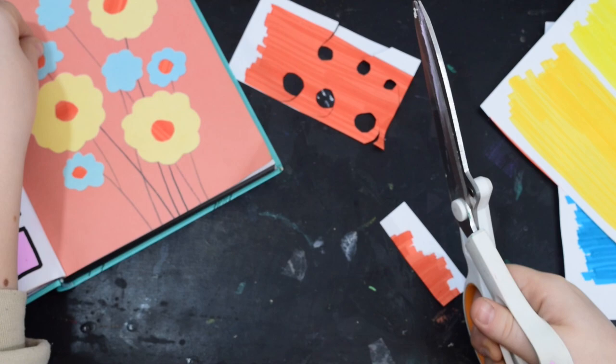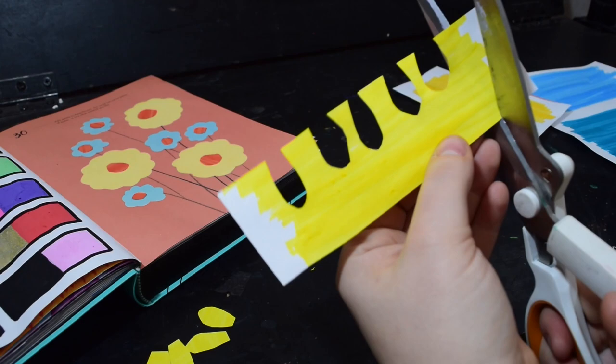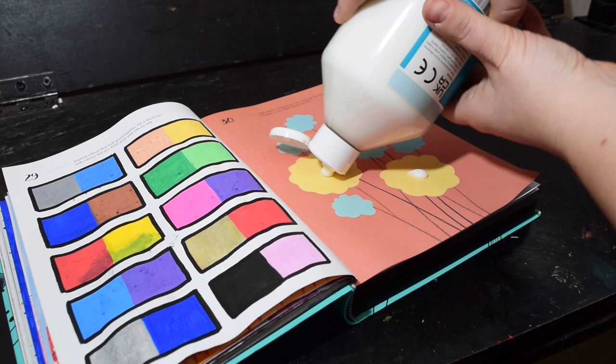So I just continue to cut out all these little petal shapes. Some are wider, some are longer just to create lots of uniqueness and make it a bit more different.